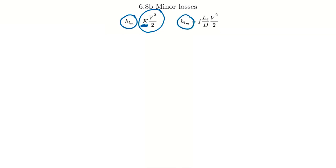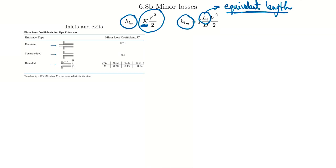I'll do an example after marching through the different things that can cause losses, to demonstrate how we use the K coefficient. As engineers wanting to minimize losses and make creative designs, we look at these different setups to understand the loss coefficients. For pipe entrances, a re-entrant pipe sticking into a tank has a high loss coefficient of 0.78. A square-edge entrance gives less, and a rounded entrance can bring K all the way down to 0.04 — almost negligible loss — just by rounding the pipe entrance.